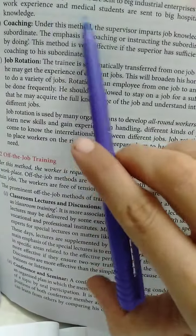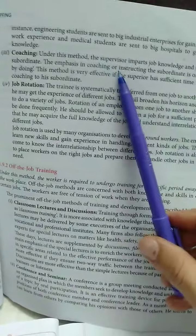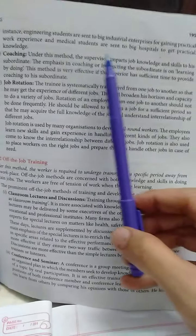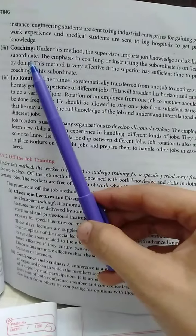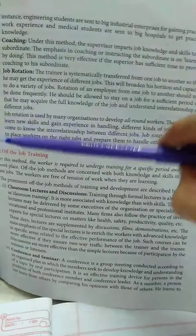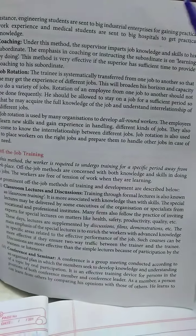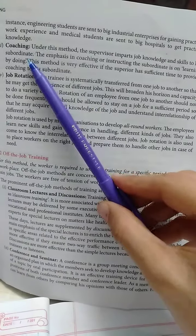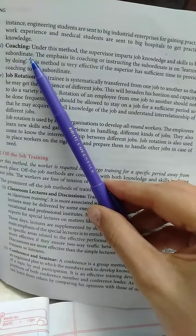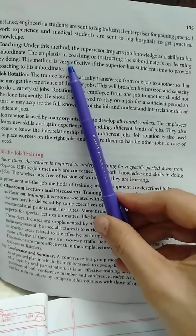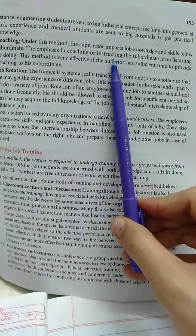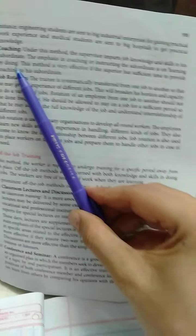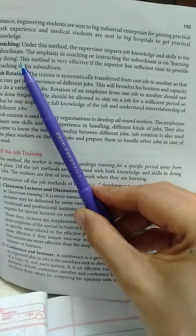Continuing with this, yes we were on coaching. So under this method, supervisor imparts job knowledge and skills to his subordinate. Supervisor is upper rank and subordinate is lower rank. So in this way, he gives his knowledge and skills as a coach to his subordinate — teach him, coach him, guide him.